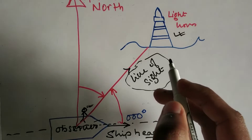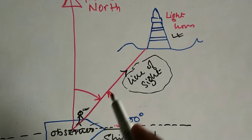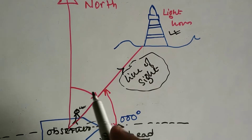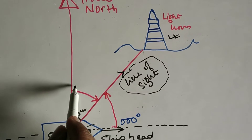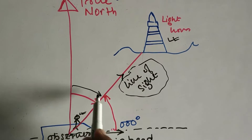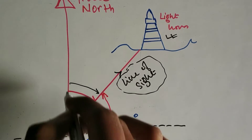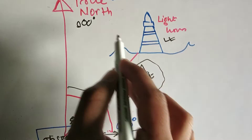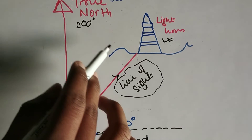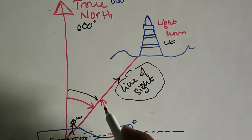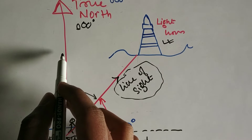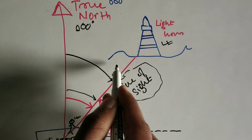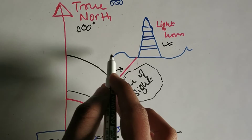What is true bearing? The true bearing of an object — in this picture the lighthouse — is the angle at the ship between the geographic north, that is true north, which is 000 degrees, and the line of sight of the object. The angle will be measured from true north to the line of sight, so let's say it is X degrees, written as 00X degrees.